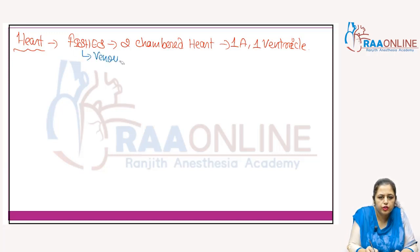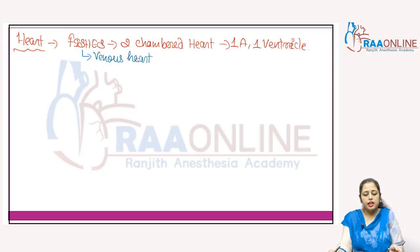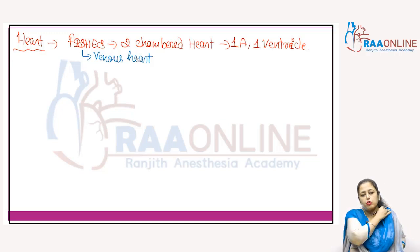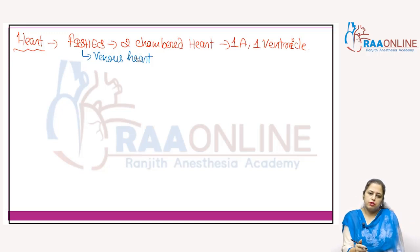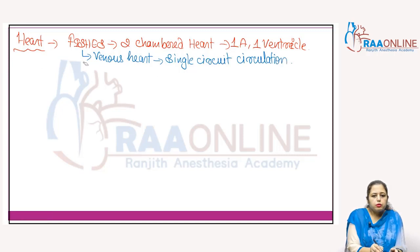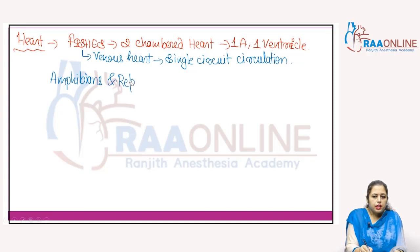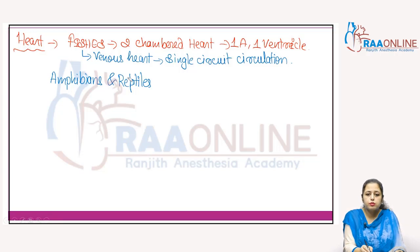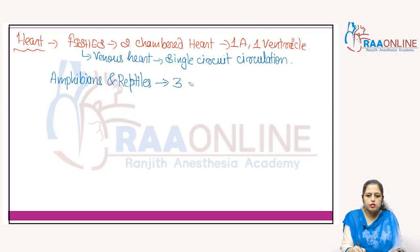Fishes have a venous heart because they carry only deoxygenated blood, and they show single-circuit circulation. When we talk about three-chambered hearts, according to NCERT, the three-chambered heart is present in amphibians and reptiles. In reptiles, the interventricular septum is not properly formed, so according to NCERT it is three-chambered, but generally it is considered three-and-a-half chambered. Amphibians and reptiles have three-chambered hearts: two atria and one ventricle.